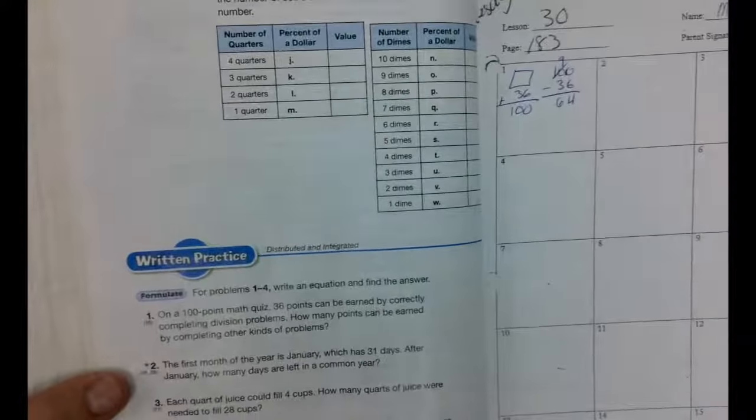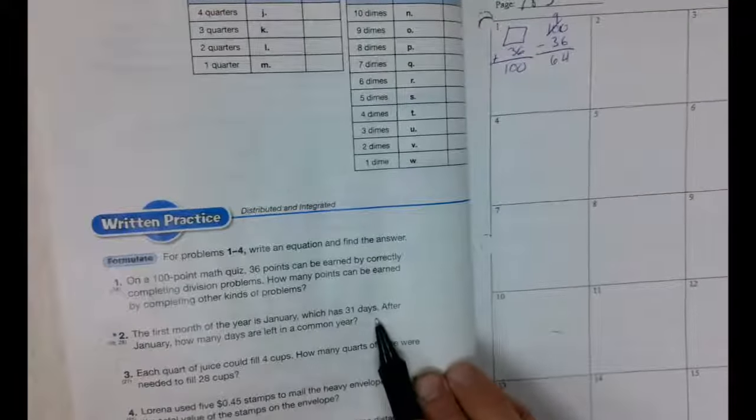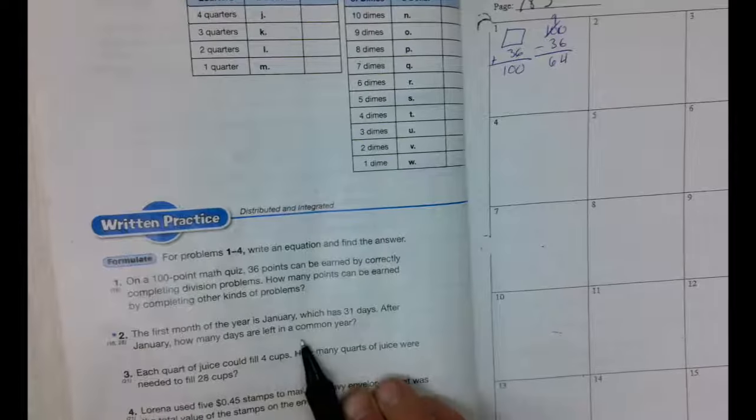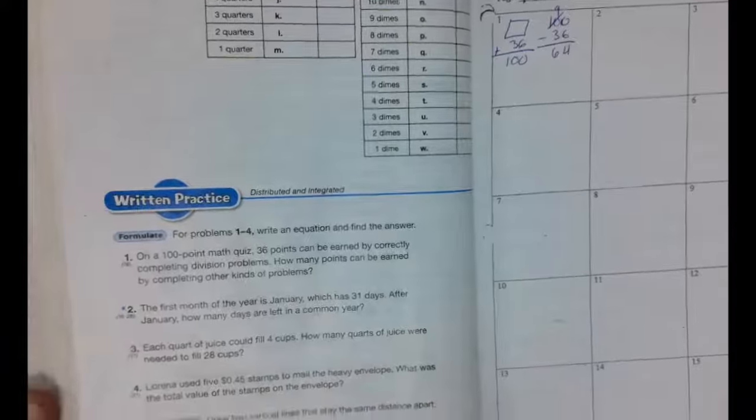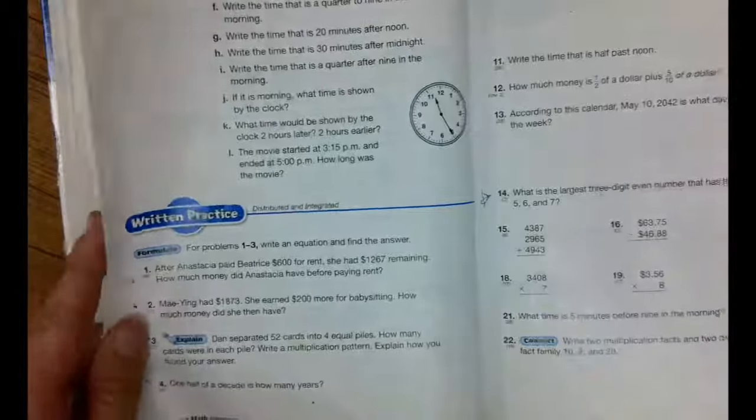Number two, the first month of the year is January, which has 31 days. After January, how many days are left in a common year? Now we need to know how many are in a common year, and if you don't remember, you're going to look it up in lesson 28. So I turn back a few pages to lesson 28, and here comes my common year, 365.